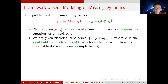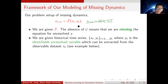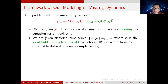Since G is unknown — it is actually missing — in order to obtain the closure model, we need more information. Here we are given a set of historical datasets for X(T) and Y(T). Y(T) is called an identifiable unresolved variable, which I will discuss in the following examples.